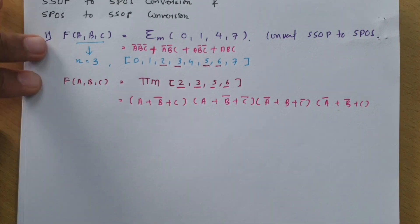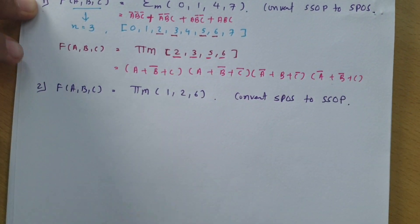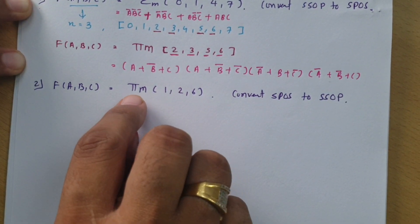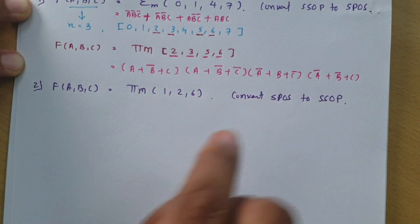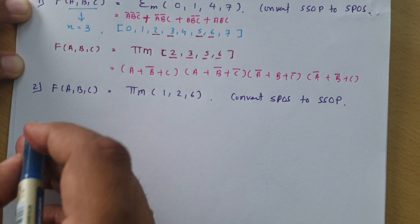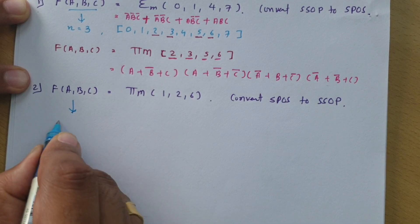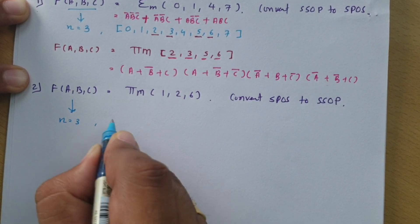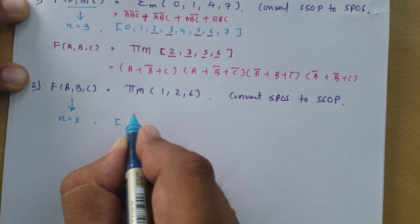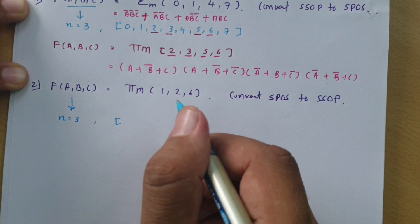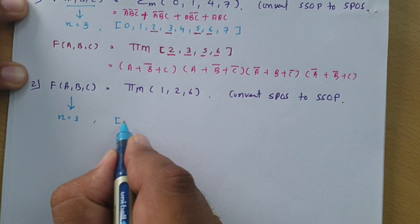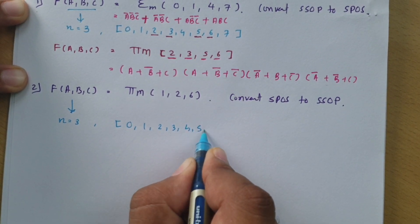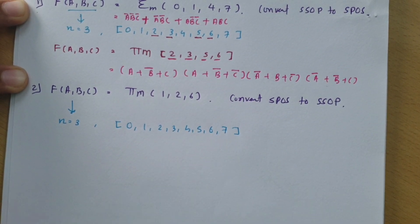Let us have a few more questions. Here our agenda is to convert SPOS into SSOP. As I said, first we need to see the number of variables. There are 3 variables, so total 2 to the power 3 means 8 terms, starting from 0, 1, 2, 3, 4, 5, 6, and 7.